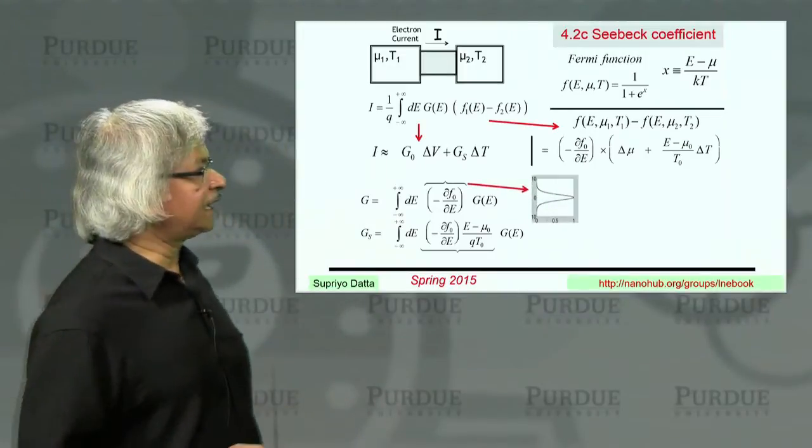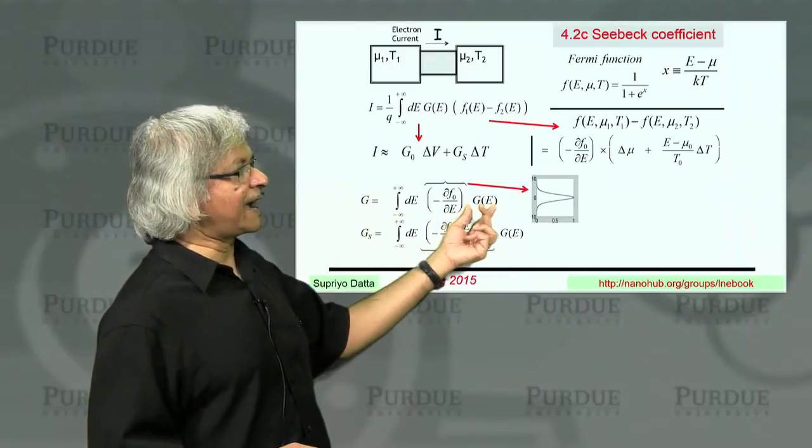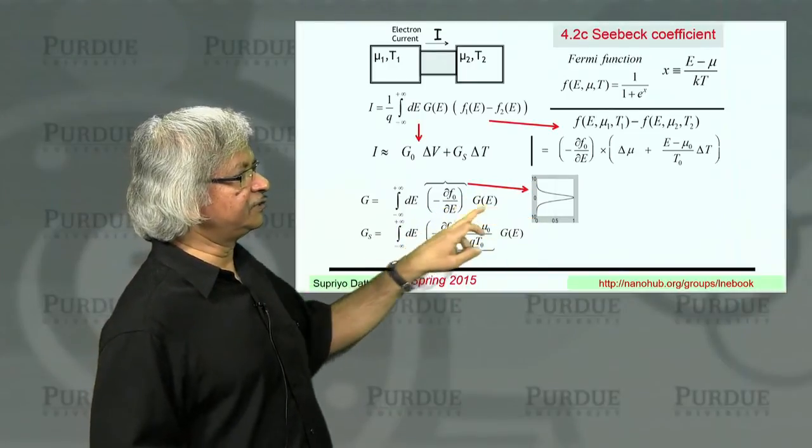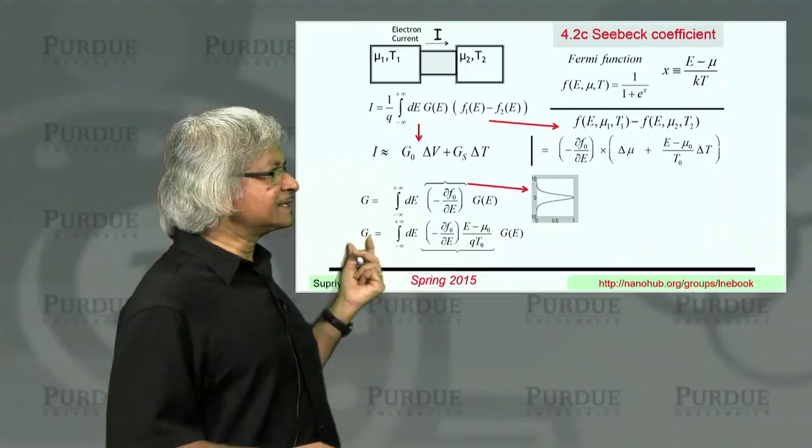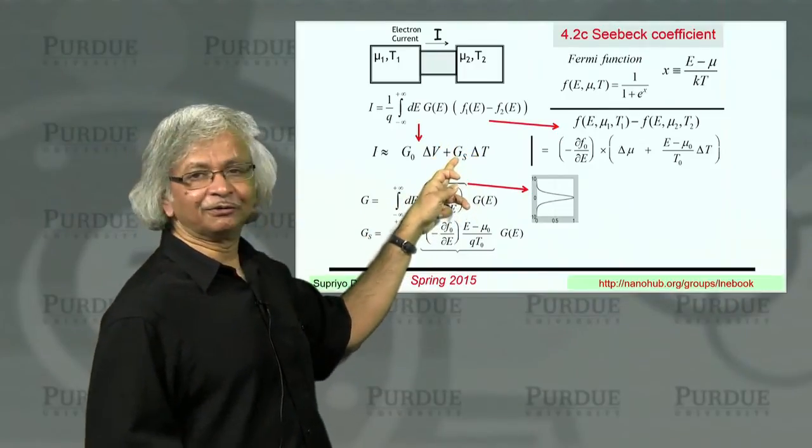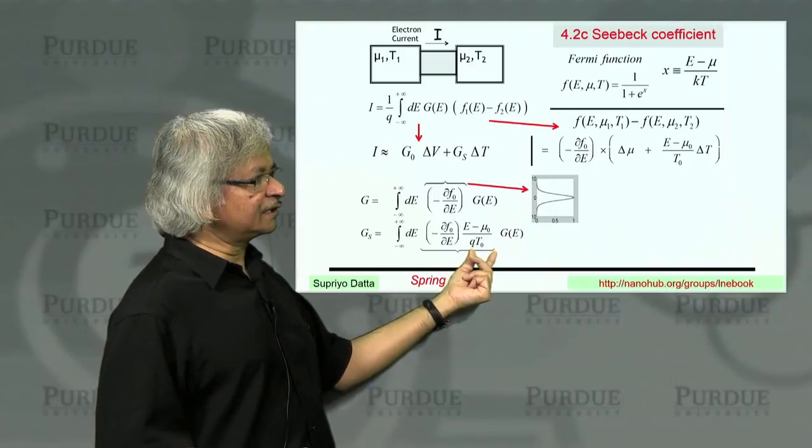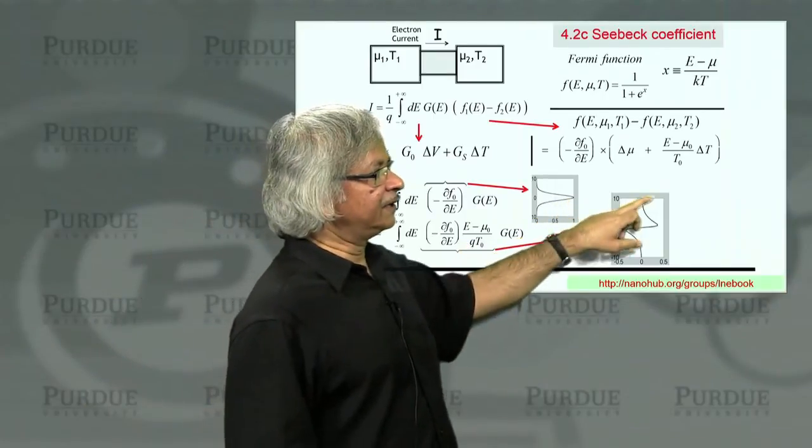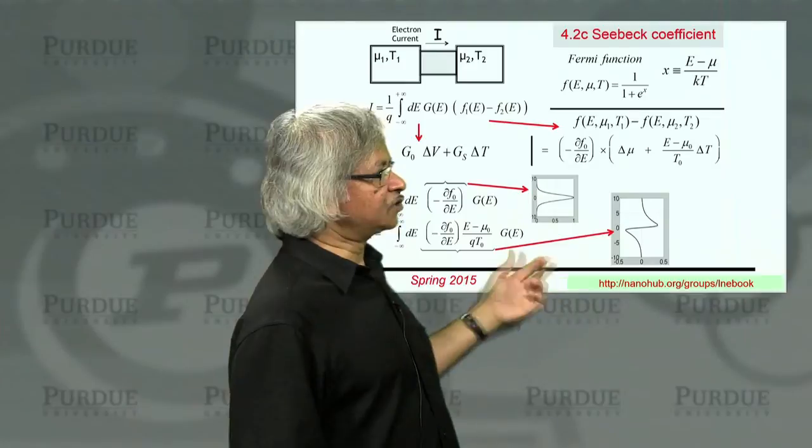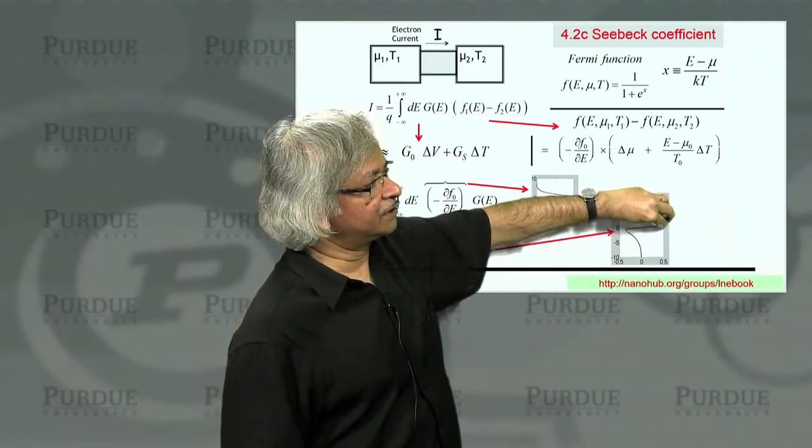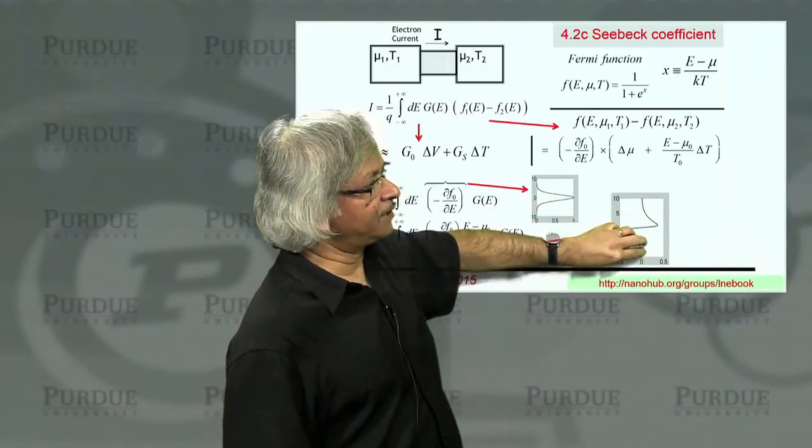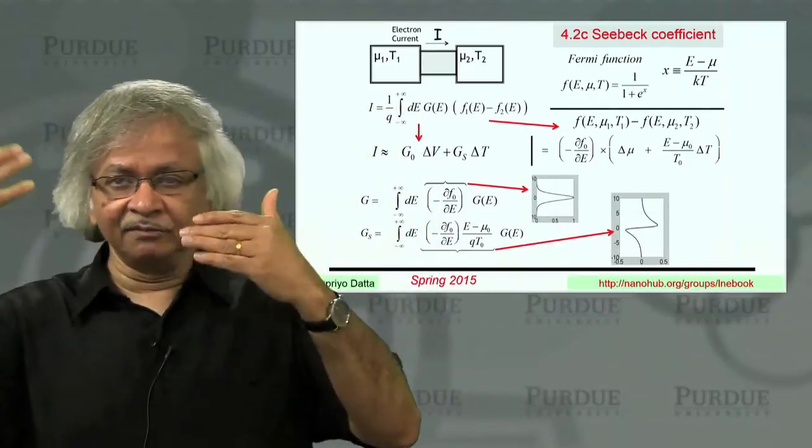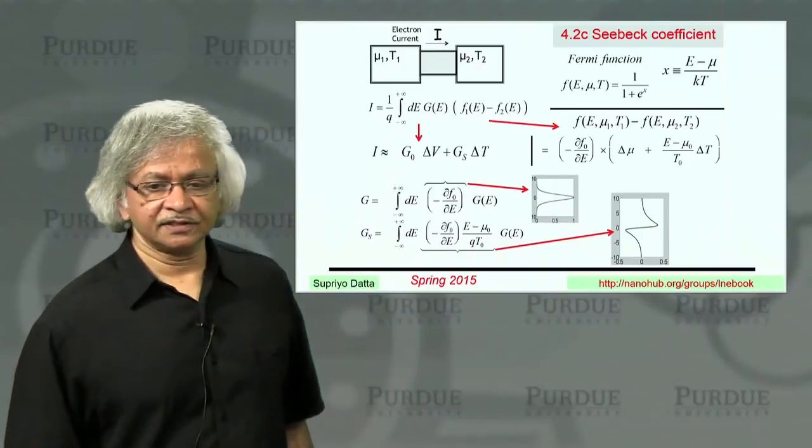When you look at the conductance, you realize the conductance is like an average of G of E, of this conductance function over around the Fermi energy because dF dE looks like that. But when you look at this second coefficient, the one related to temperature, you notice there's an additional factor here, which is anti-symmetric. So when you plot that function, it doesn't look like that. It looks more like something that changes its sign. And so when you do this integral, it kind of takes the conductance function above mu and subtracts from it the conductance function below mu, which is what we had physically argued. That it's this difference that determines how much current you'll get under a temperature difference.